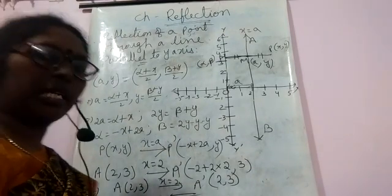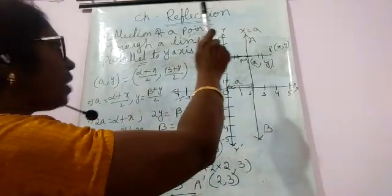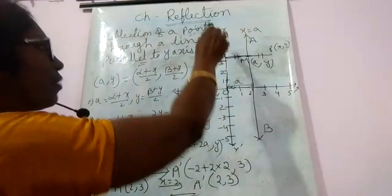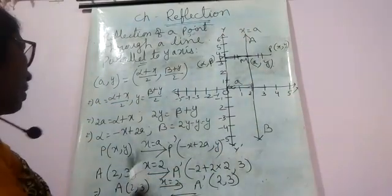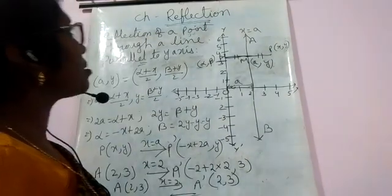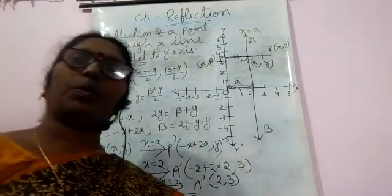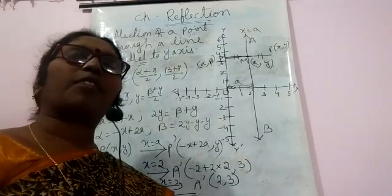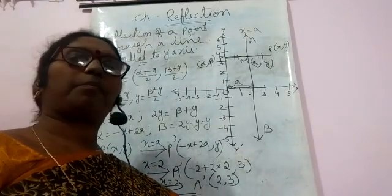To summarize: when a point reflects through the x-axis, its y-coordinate changes sign. When a point reflects through a line parallel to the x-axis, its y-coordinate becomes -y + 2a. When a point reflects through the y-axis, its x-coordinate changes sign. When a point reflects through a line parallel to the y-axis, its x-coordinate becomes -x + 2a and y-coordinate remains the same. With this, the reflection chapter is completed. If anything is not clear, please comment in the comment box so I can clear your doubts. Please don't forget to subscribe the channel. Thank you.